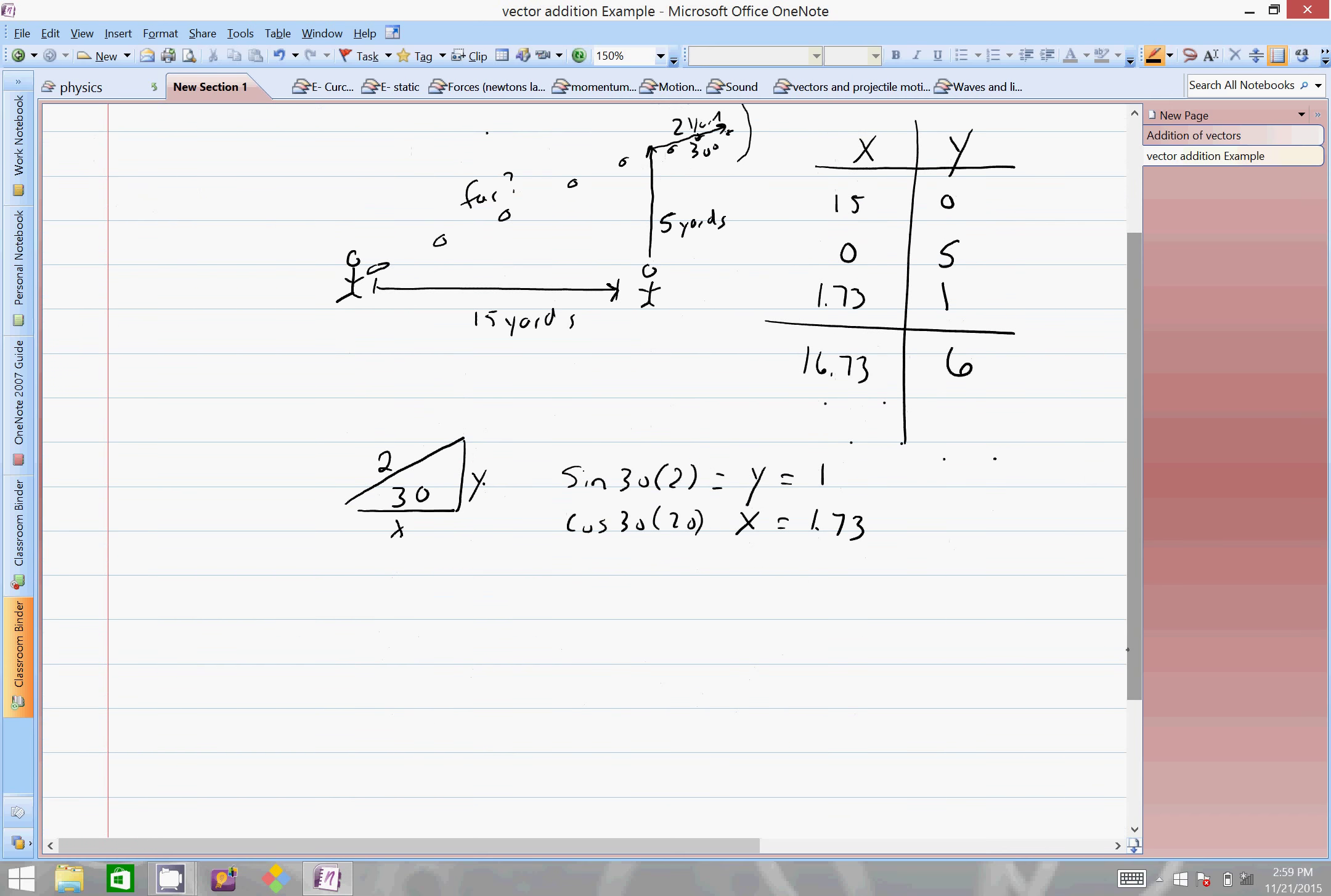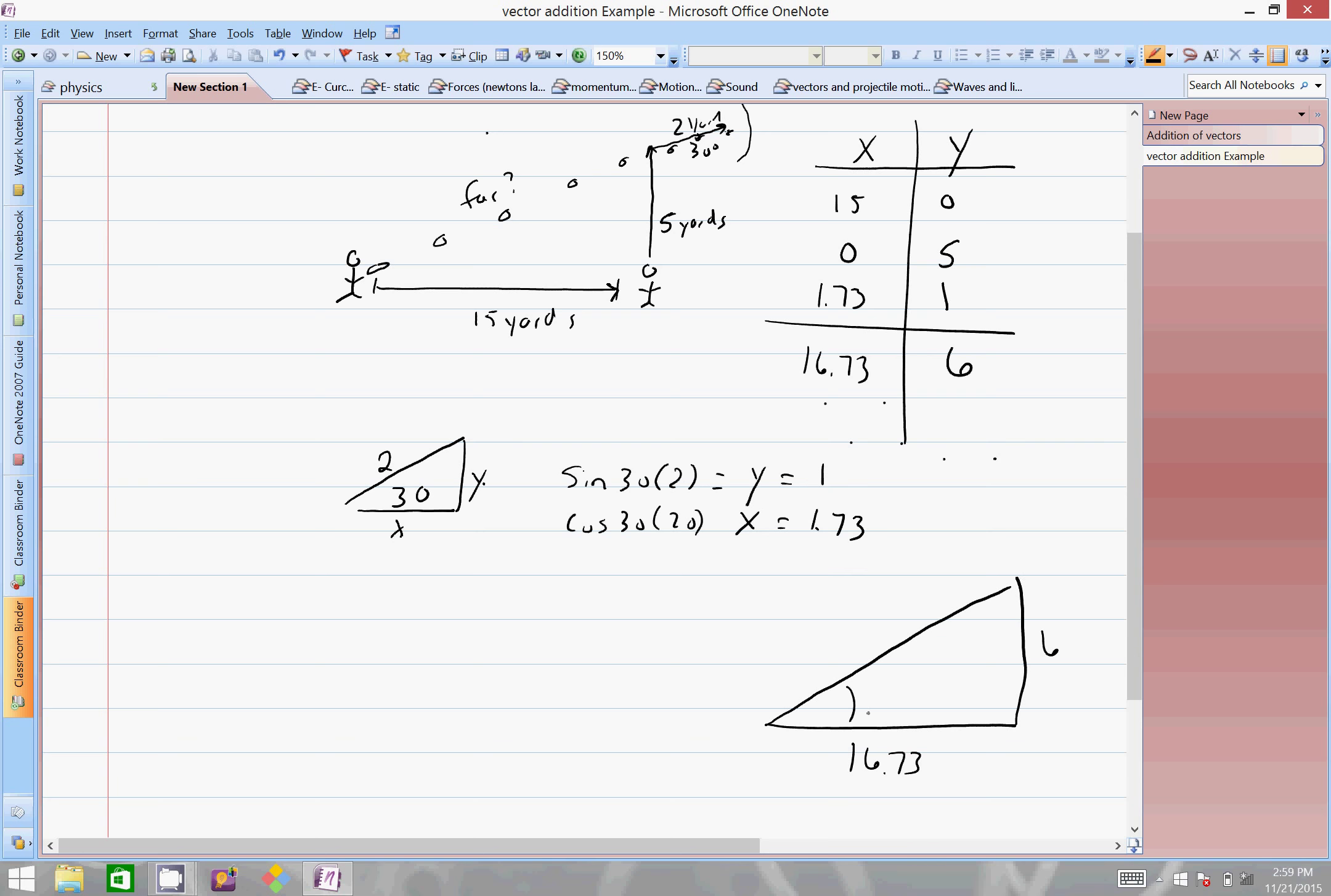And the cosine is going to be 1.73. Alright, so this little angle here caused us to move 1 in the y direction and 1.73 in the x direction. Let's add them all up: we got 6 for the y component, and for the x component we got 16.73.